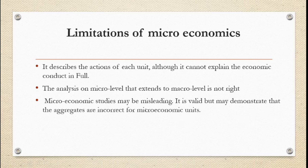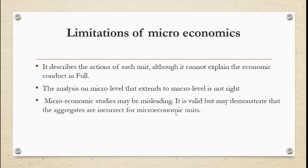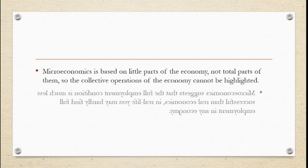Microeconomics studies may be misleading — it is valid, but may demonstrate that aggregates are incorrect for the macroeconomic unit. The information we get from microeconomics at the individual level, when we try to study it at a large, macro level and identify it as a whole, those figures become misleading and do not give correct, accurate information. Predicting 100 crore people based on 10-50-1000 individuals is simply not right.